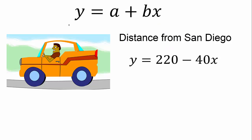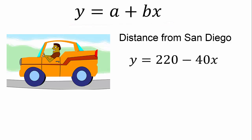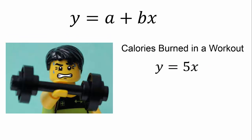We can use the intercept form of a linear equation to model various situations. This equation tells us that the driver started 220 miles from San Diego and got 40 miles closer every hour. Our equation for the number of calories burned in a workout is missing the A, but that's just because he hadn't burned any calories yet when his workout started. The coefficient of x tells us that he burned 5 calories every minute during his workout.